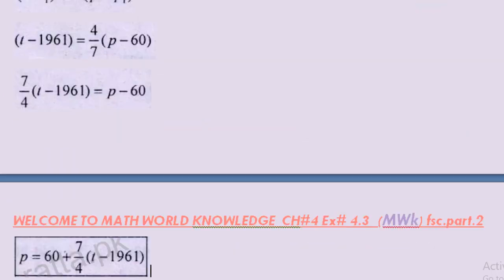Yeh equation find kar lete hain in the form of t. Isko humne cross multiply kiya toh yeh ban jayega: 7/4 into (t minus 1961) is equal to p minus 60. Ab jiski value hamare paas given hogi wo hum darj kar denge. P hum separate karte hain, 60 idhar aake plus ho jayega.